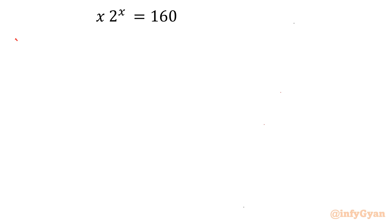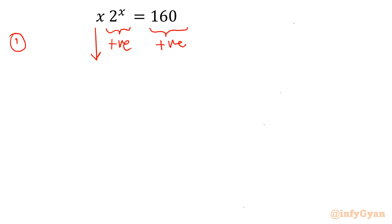Let me begin with a simple observation of this equation. The right-hand side is positive 160, so obviously the result must be positive. Now, 2 to the power x is always positive — it cannot be negative or zero. So since we are multiplying x with 2 to the power x, we can conclude x must be positive. We will only consider positive x for this equation to hold true.